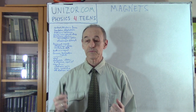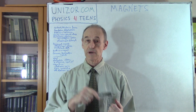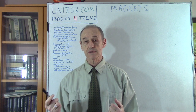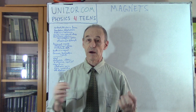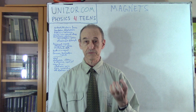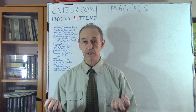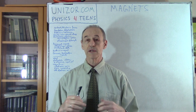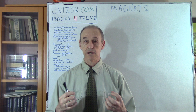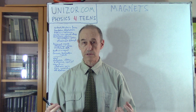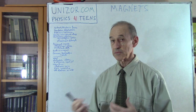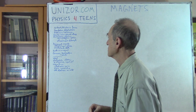Also, in case of gravitation it's always attracting. In case of electrostatic, it can be either attractive if you have positive and negative charges, or it can be repelling if you have two negatives or two positives. So there are some differences and some similarities.